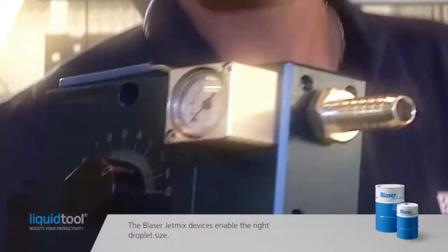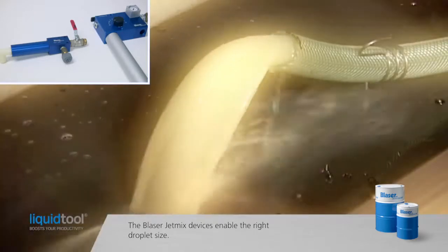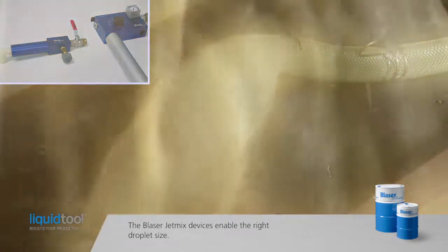Mixing with the Blaser jet mixer ensures that the oil droplets are small. The result is a homogenous and stable distribution of the oil droplets in the water.